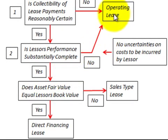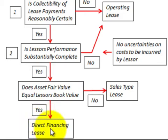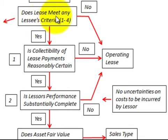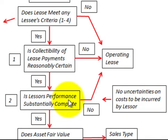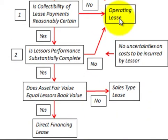If both additional tests are yes, we then decide: does the asset's fair value equal the lessor's book value? If yes, it becomes a direct financing lease. If no, it becomes a sales type lease. So in summary, the lessor's decision criteria involve the four lessee criteria, then collectability of payments, and then the lessor's substantial performance — resulting in either an operating lease, a sales type lease, or a direct financing lease.